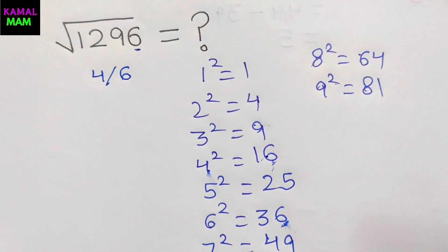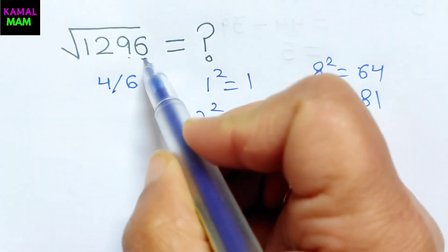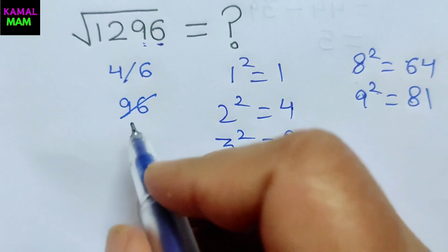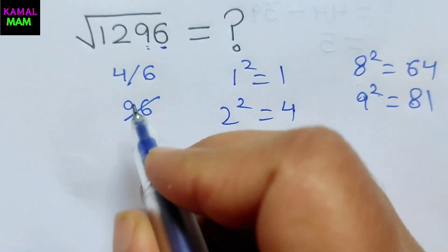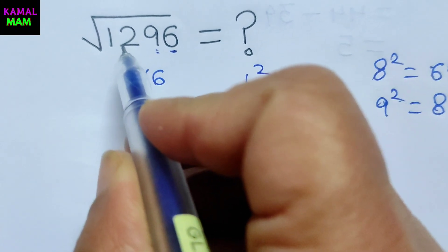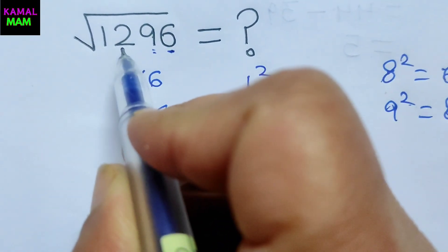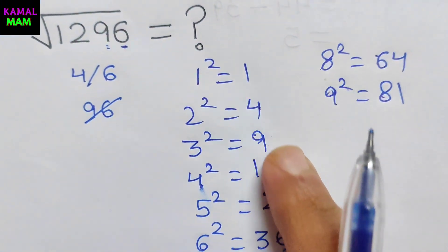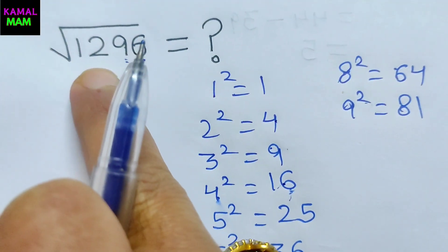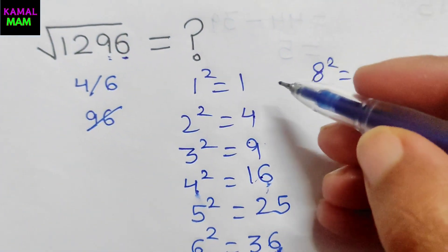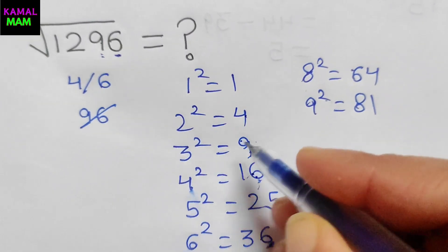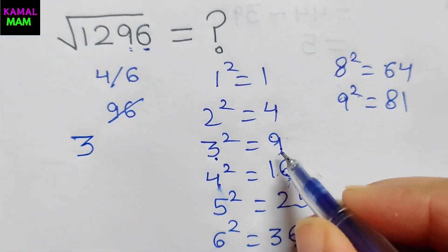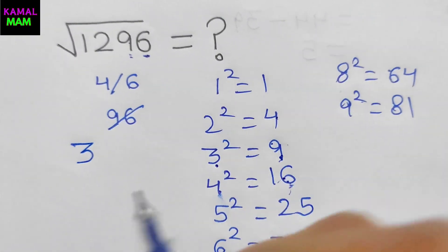Now just cancel out the last two digits. Now look at the remaining number — it should be less than 12, the first two digits of the number. Find which number's square is less than 12. It's 3, since 3 squared is 9. So we write down 3.